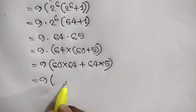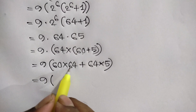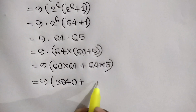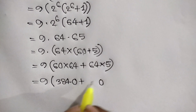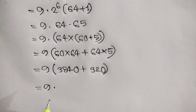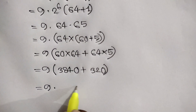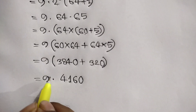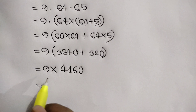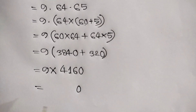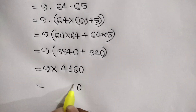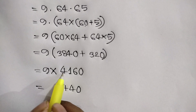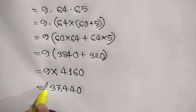Computing 64 times 60: 6 times 4 is 24, carry 2; 6 times 6 is 36, plus 2 is 38, giving 3840. Computing 64 times 5: 4 times 5 is 20, carry 2; 6 times 5 is 30, plus 2 is 32, giving 320. Adding 3840 plus 320 gives 4160. Multiplying by 9: 9 times 4160 gives 37440, and that is our final answer.